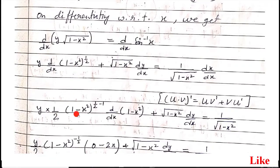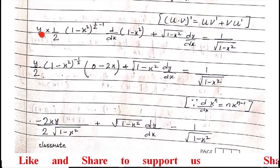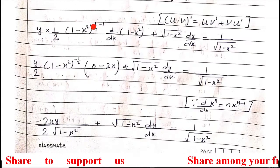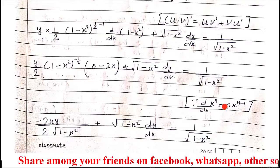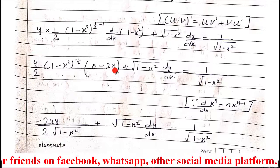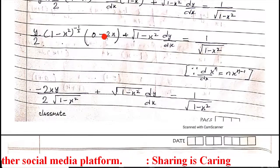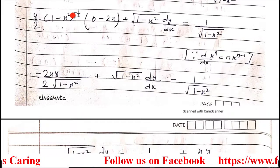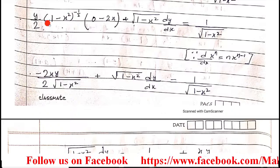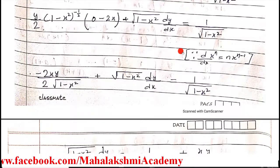We apply the x^n formula (n·x^(n-1)) with chain rule to differentiate root(1 − x²). The exponent is half, so it becomes minus half, and we differentiate (1 − x²): the constant 1 gives 0, and x² gives 2x. Multiplying y by 1/2 gives y/2. The minus half power brings root(1 − x²) into the denominator, and 2x and y multiply to give minus 2xy in the numerator.